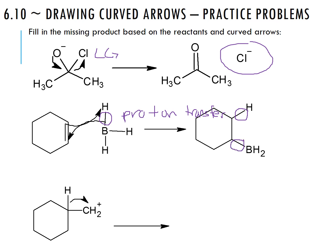In the last problem, we have an arrow going from the electrons of a carbon-hydrogen bond toward a primary carbocation. Instead of having a CH2, we end up with a CH3 because we went through a hydride shift, and now we have a tertiary carbocation.